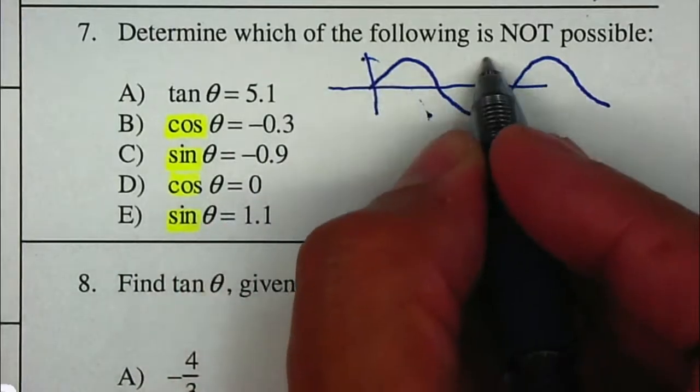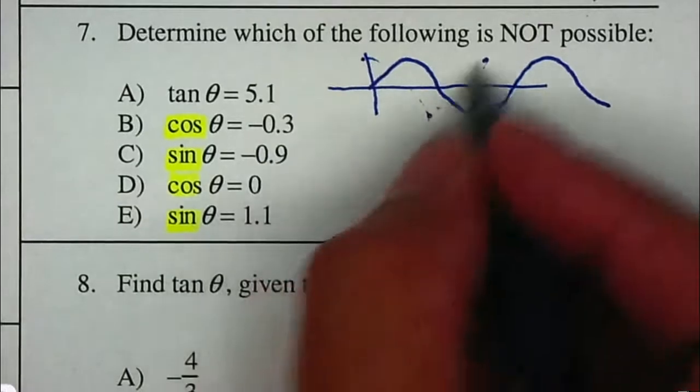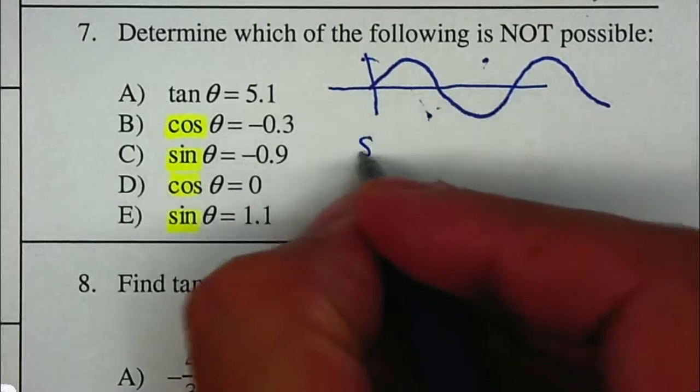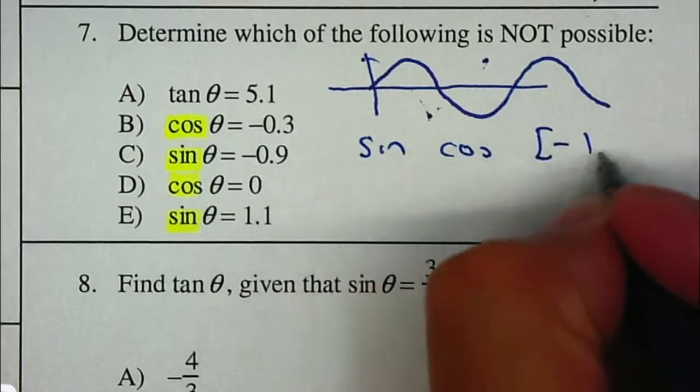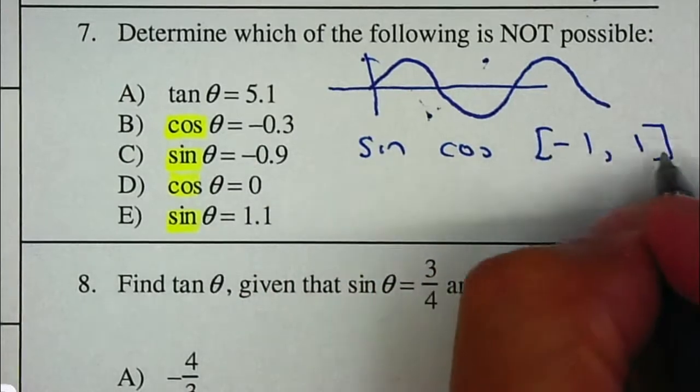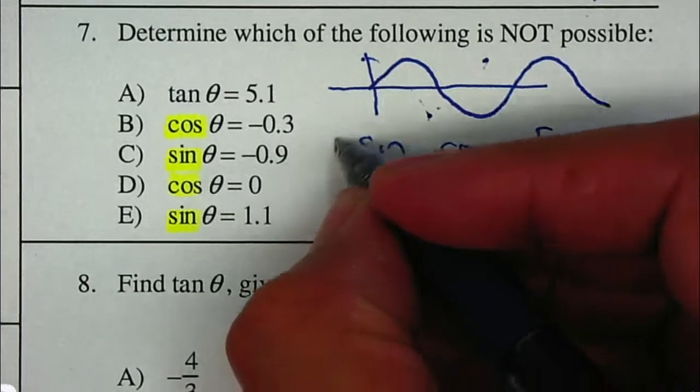So your sine and cosine will be from negative 1 to 1. Your tangent, there are no restrictions. If you look at the graphs of tangent, they go from negative infinity to positive infinity.